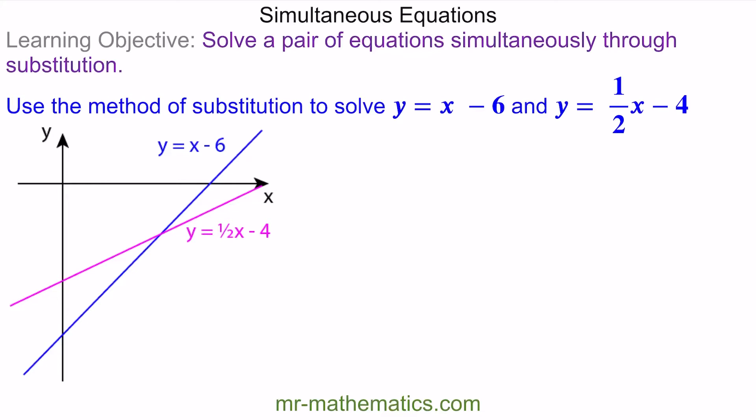Welcome to our lesson on solving a pair of simultaneous equations through substitution. Substitution means we're going to substitute an expression in place of a variable. Here we have two equations: y equals x minus 6 and y equals one half x minus 4.